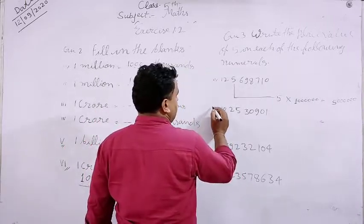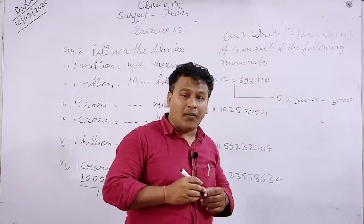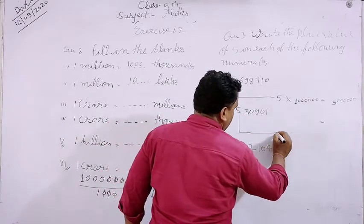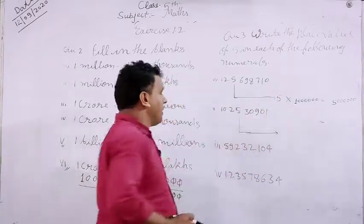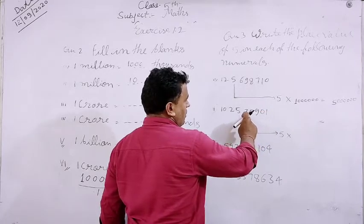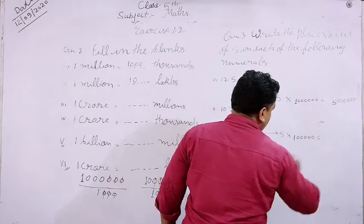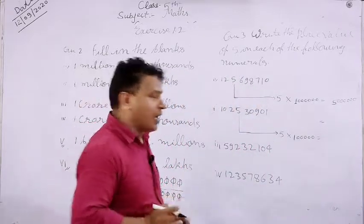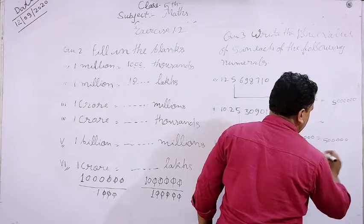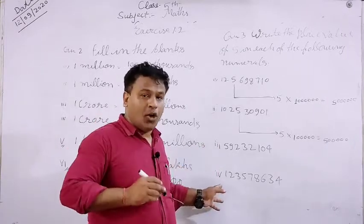Next dekhenge — isi ka second diya gaya hai, isme bhi aapko kewal 5 ka place value find karna hai. Jaise ki aapka question diya gaya hai — only you will select the place value of 5. Second mein bhi 5 ka place value find karna hai. 5 jo diya gaya hai uska note kar liya, uske baad multiply karenge — dekh'te hain kis place par hai: ones, tens, hundreds, thousands, ten thousands, lakh. One lakh se multiply karenge — one lakh into 5 equal to five lakh. Place value aa jaayega. It is so simple — now you will solve third and fourth in homework.